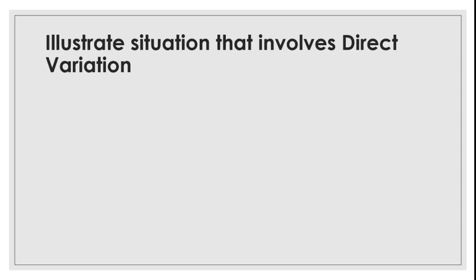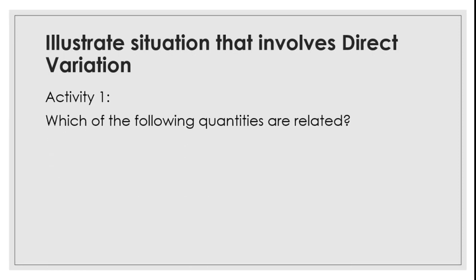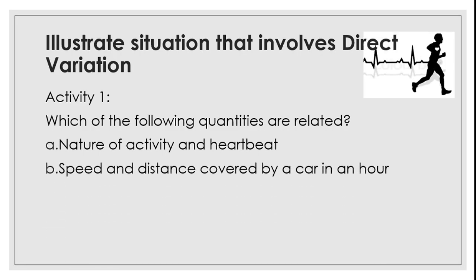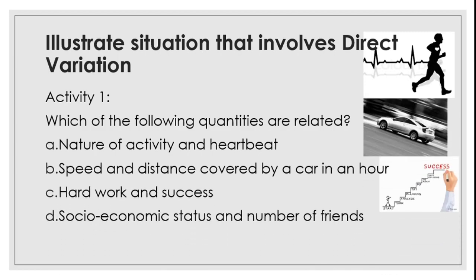First is to illustrate the situation that involves direct variation. Which of the following quantities are related? When we say related, one quantity affects the other. A: the nature of activity and the heartbeat. B: speed and distance covered by a car in an hour. C: hard work and success. D: socio-economic status and the number of friends. I want you to answer this on your own — I'll give you one minute, and then we are going to discuss. Arguably, except for socio-economic status and the number of friends, the other pairs of quantities are related.